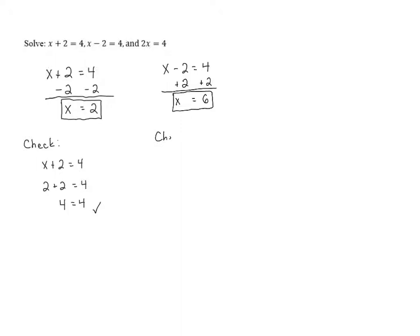Let's check to make sure that's correct. The original equation was x minus 2 equals 4. If we substitute in 6 for x, that gives us 6 minus 2 equals 4. When we evaluate the left-hand side, 6 minus 2 gives us 4. Since the left and right-hand sides are equal, we know this is correct, and so our solution was the correct one.